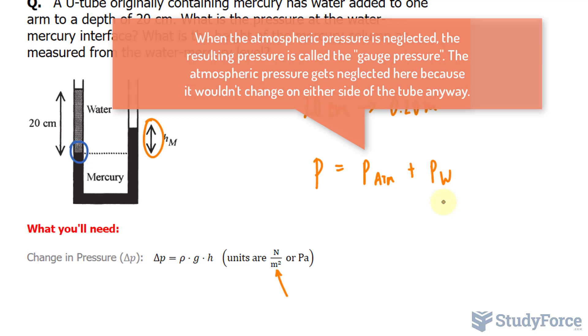If we neglect the pressure of the atmosphere and set it equal to 0, we can easily find the gauge pressure by only calculating this part.